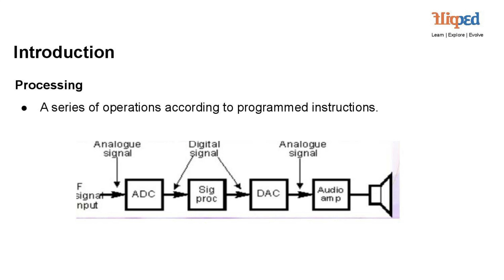After processing, the digital signal goes through the DAC (Digital to Analog Converter) block, which converts it back into an analog signal by reconstructing a continuous waveform from the discrete digital samples. The analog signal from the DAC is then amplified by the Audio Amplifier block, which increases the power or amplitude of the signal to a level suitable for driving speakers or headphones. Finally, the processed and amplified analog signal is the output of the signal processing system, representing the modified version of the original input signal based on the operations performed in the signal processing block.